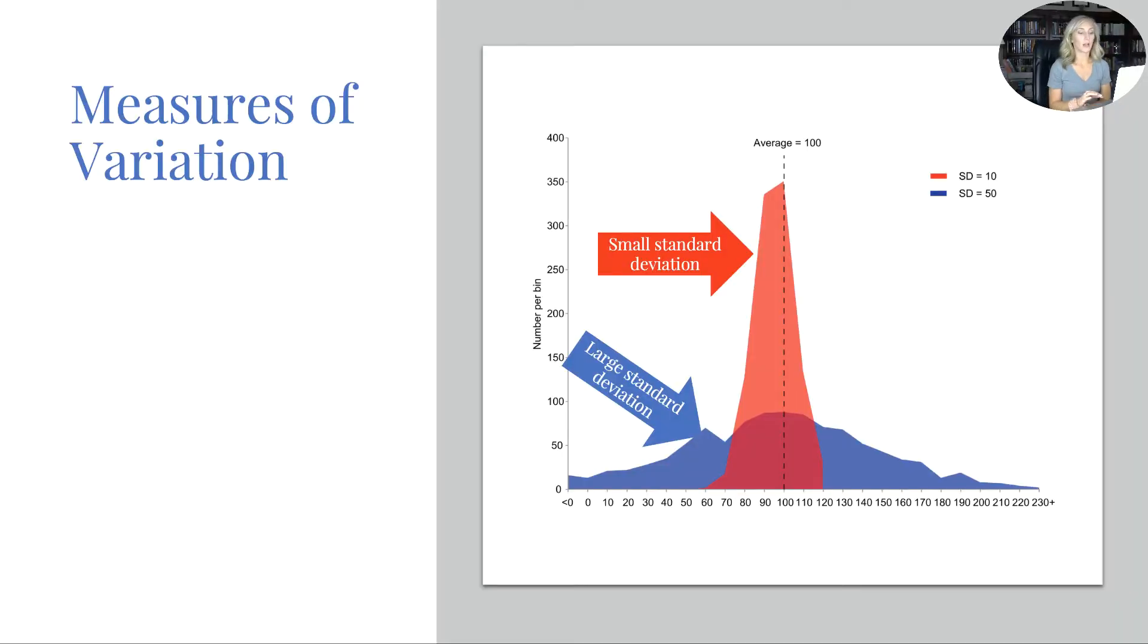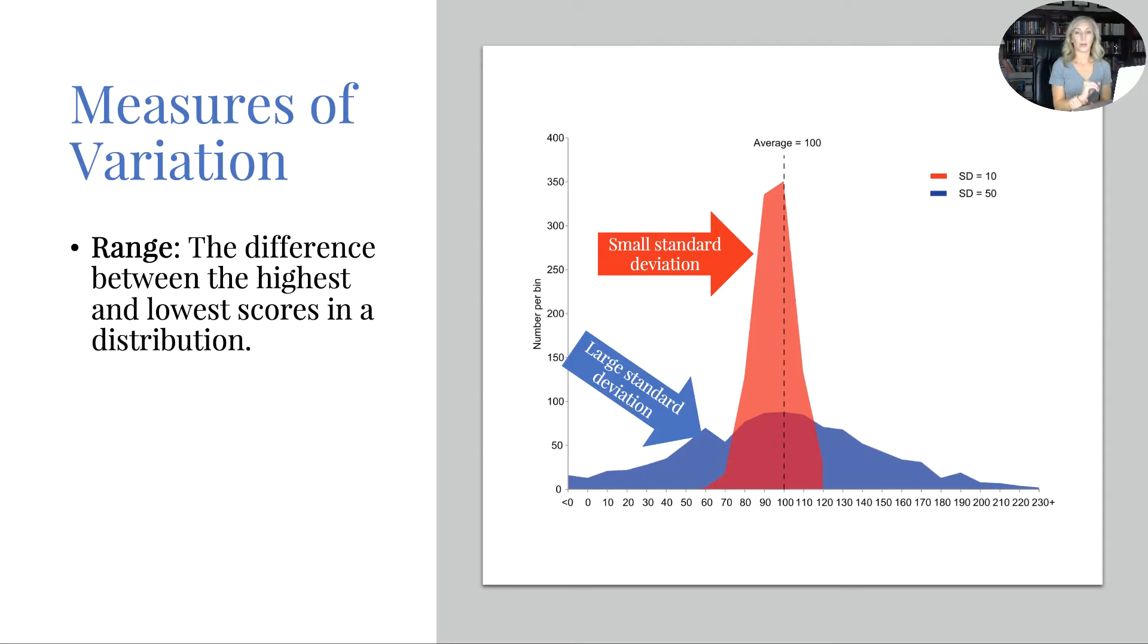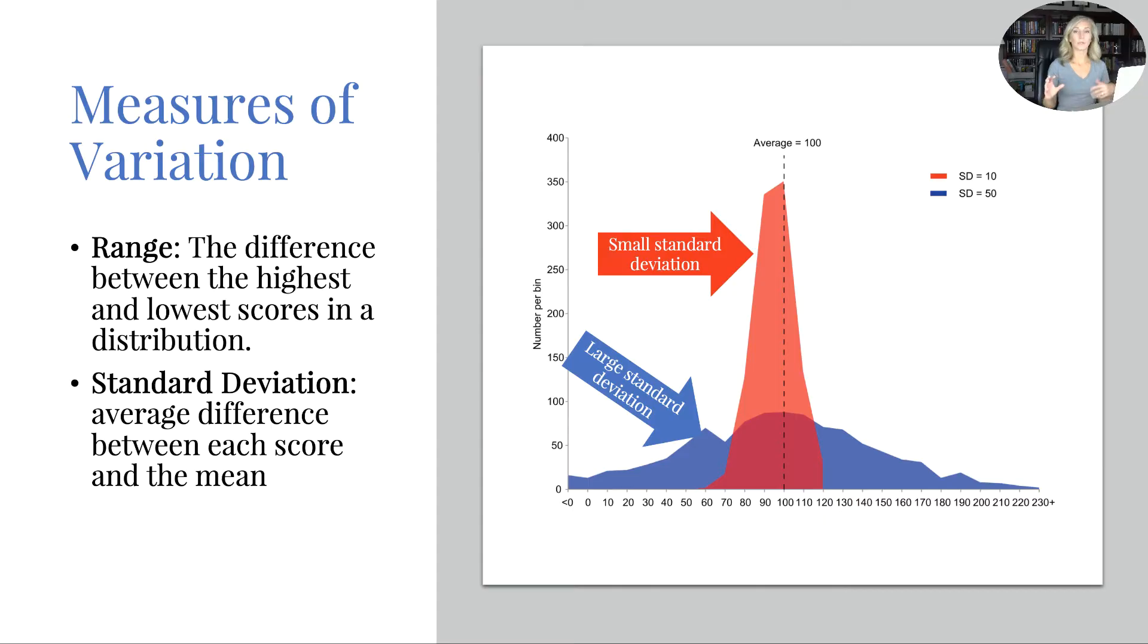Then we have what's called measures of variation. So first we have range. And range is the difference between the highest and the lowest scores in a distribution, right? Like what is the range of ages of people in your family? It could be like a newborn all the way up to like 90 years old, right? The lowest and the highest, that is your range. Then you have what's called standard deviation. Standard meaning average. Deviation meaning difference, right? To be deviant means to differentiate or be different from. So it's the average difference between each score and the mean.